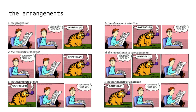Here we can see an overview of the arrangements we will examine. First, the progenitor. Then I have given names to the other five: the absence of affection, the viscosity of thought, the resentment of apportionment, the community of vice, and the pervicacity of addiction.